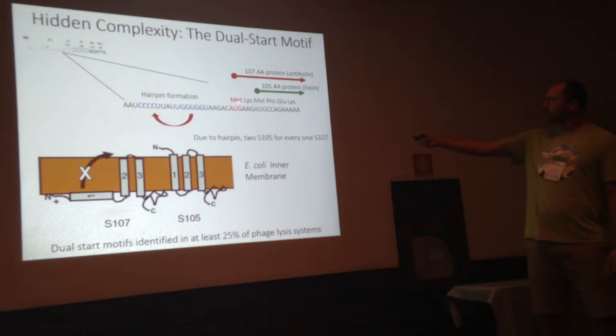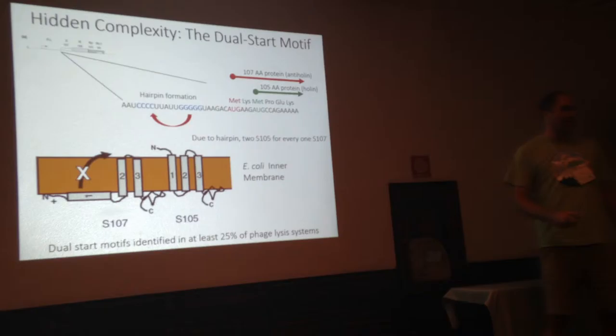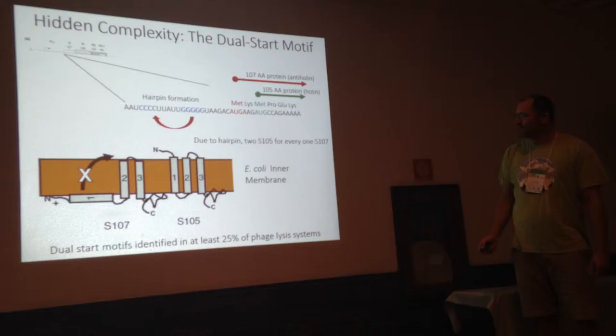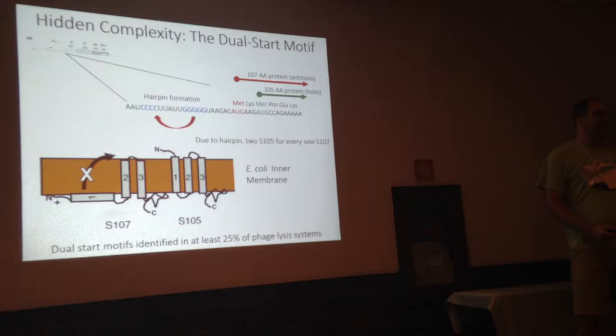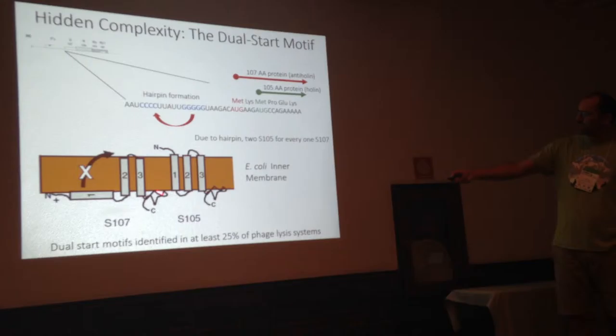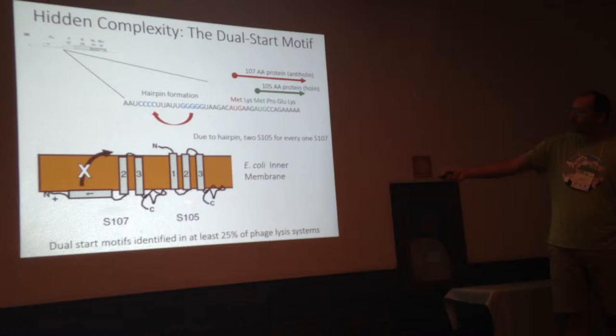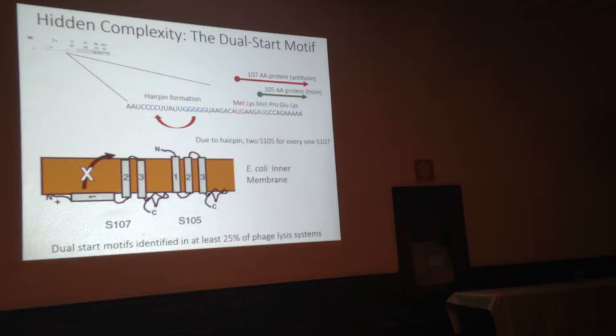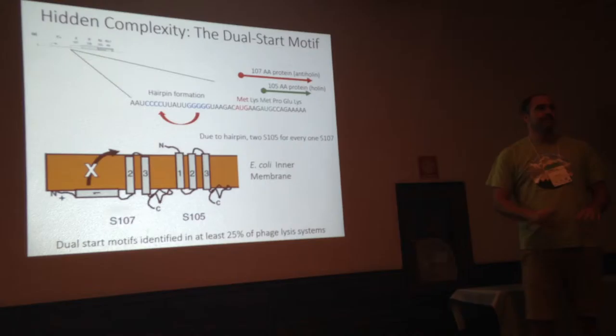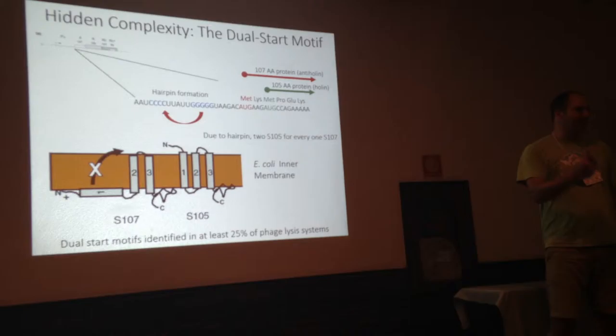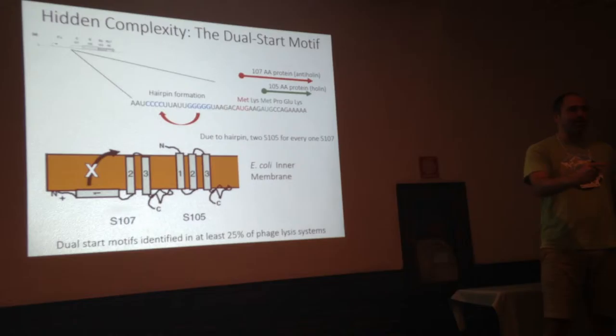Occasionally, the ribosome will bind to the second start codon and make the 107 amino acid protein, which we call anti-holin. The reason for that is that the anti-holin forms a 2-transmembrane domain structure in the membrane, whereas the holin makes a 3-transmembrane domain structure. Only the 3-transmembrane domain structure is able to participate in hole formation. Not only that, but the anti-holin cannot participate in hole formation — it also binds the holin and removes it from the equation. Once the holin is bound by anti-holin, it can no longer make a hole.